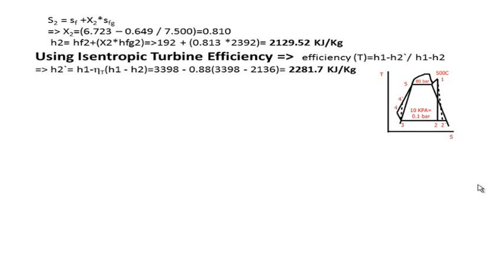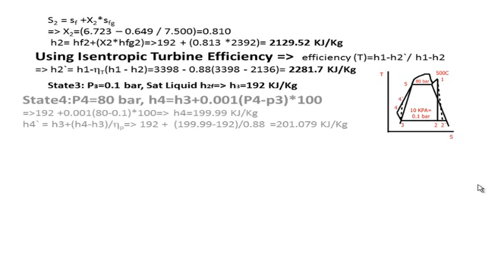We should continue to find the enthalpy of 3, which is the exit of the condenser, and 4 prime, which is the exit of the pump. State 3 simply from the steam table at 0.1 bar, the saturated liquid enthalpy would be 192 kilojoule per kilogram.